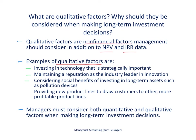There are other qualitative factors as well. It might be that we are looking at the social benefits of investing in long-term investments, such as in our manufacturing facilities, making sure we have pollution devices in place. And lastly, providing new product lines to draw customers to other more profitable product lines — maybe new product lines that don't make much money now, but the hope is customers will stay with us and buy our more profitable products over time. Managers must consider both quantitative and qualitative factors when making long-term investment decisions.